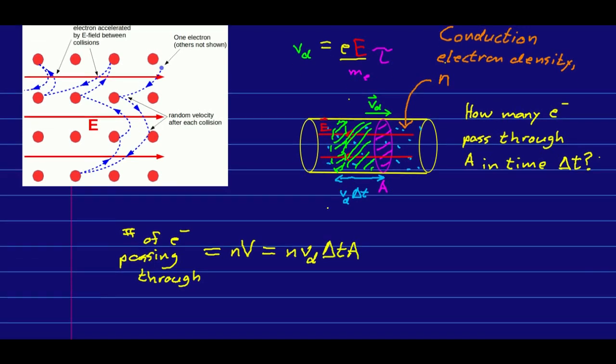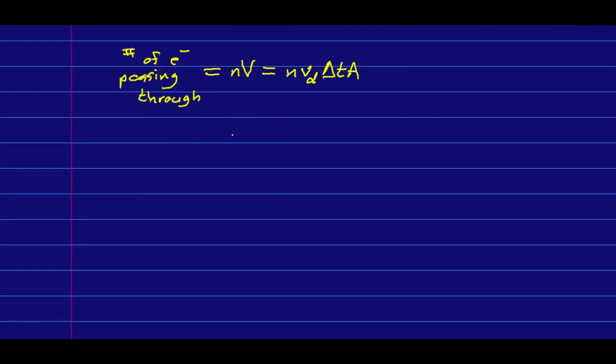And so, what we mean by the electron current is the number of electrons per unit time. We're simply dividing by delta t, and we're left with n, vd, a. And notice that that has the expected form that we know we should get with a flux. It has a density. It has a speed. And it has a cross-sectional area.